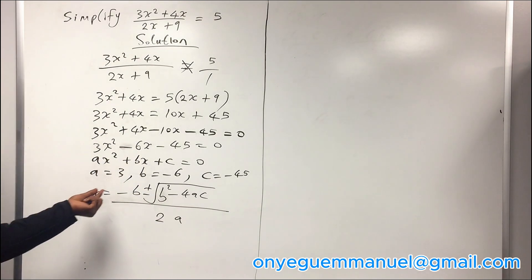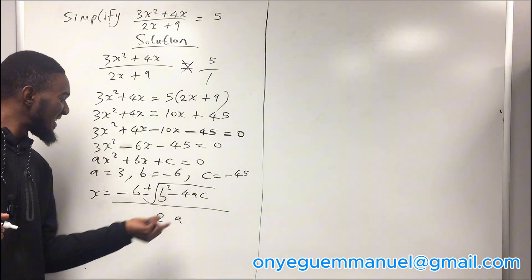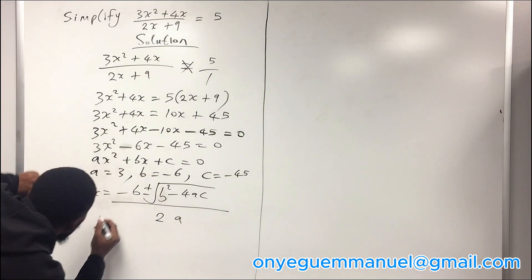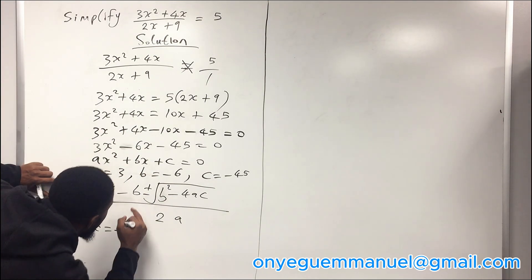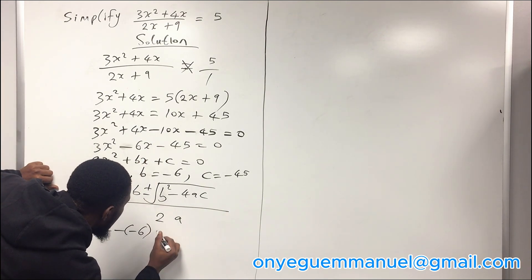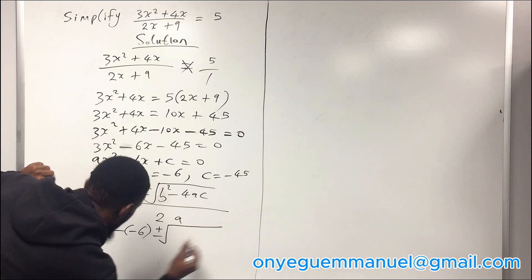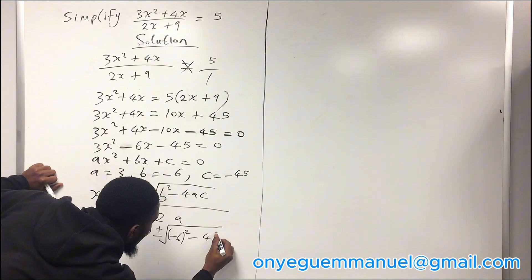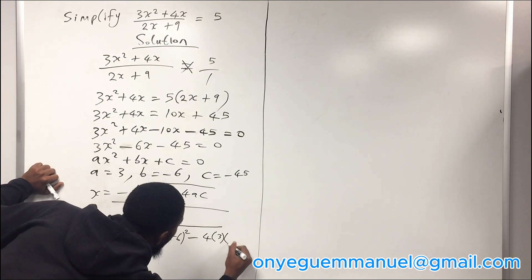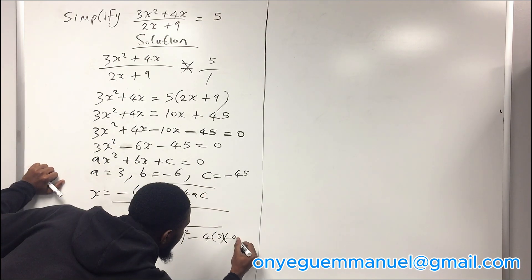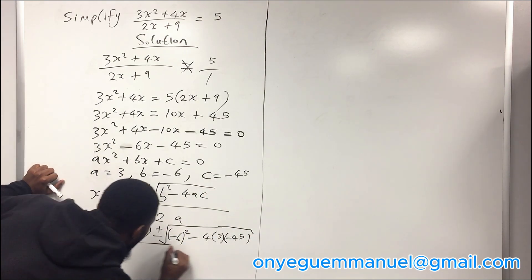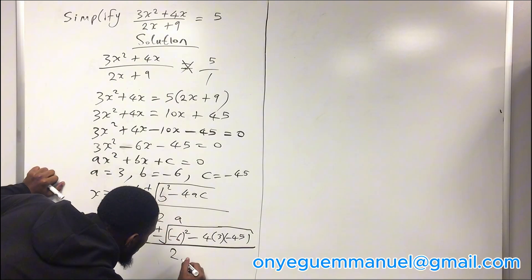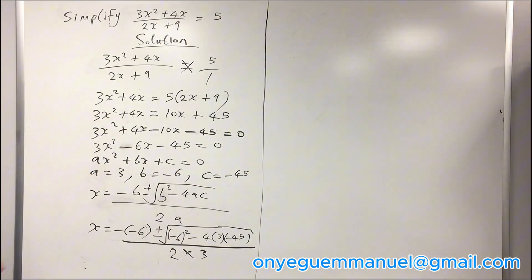We now substitute the value of a, b, and c inside this formula. x is equal to minus b, our b is minus 6, plus or minus square root of our b is minus 6 squared minus 4, our a is 3, our c is minus 45, over 2a, 2 times 3.